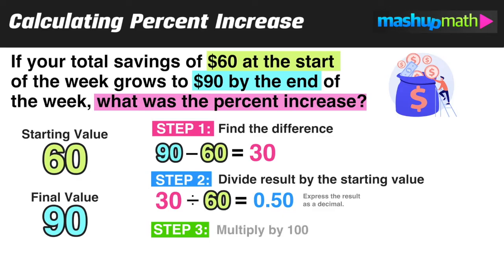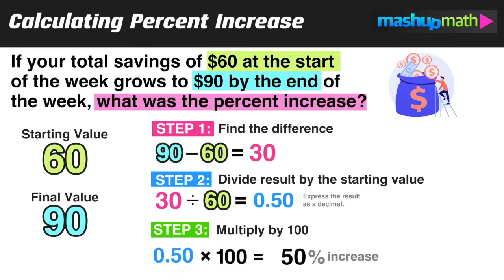The final step, step three, is to multiply by 100. Take that decimal from step two — in this case 0.50 — and multiply by 100. So 0.50 times 100 equals 50, and we can conclude there was a 50% increase between the amount of money at the start of the week and the end. The numbers will differ in other problems, but this three-step process is exactly the same.